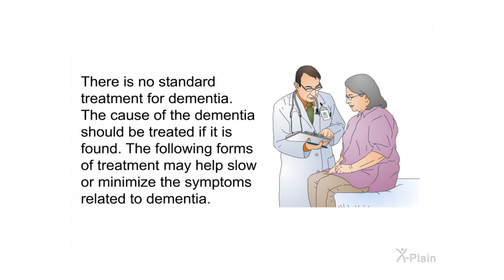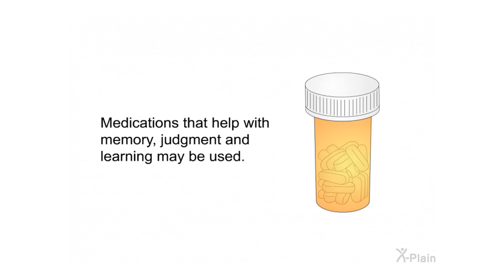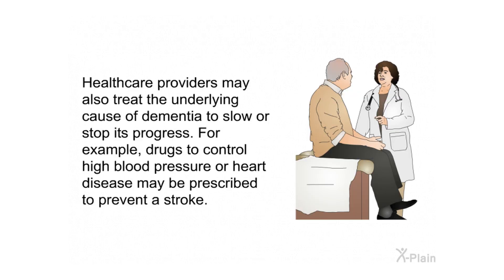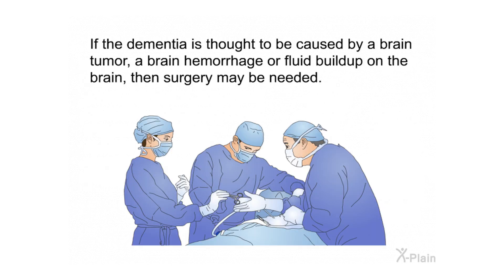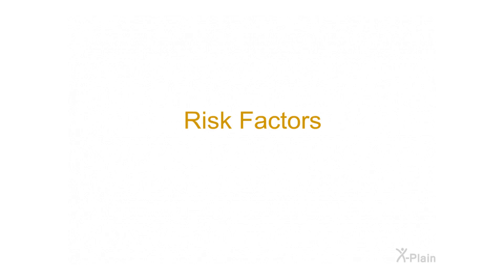There is no standard treatment for dementia; the cause should be treated if found. Medications that help with memory, judgment, and learning may be used. Healthcare providers may also treat the underlying cause to slow or stop its progress — for example, drugs to control high blood pressure or heart disease may be prescribed to prevent a stroke. Specific symptoms and behavior problems may be treated with antidepressants, sedatives, or other medications. If dementia is caused by a brain tumor, hemorrhage, or fluid buildup, surgery may be needed.